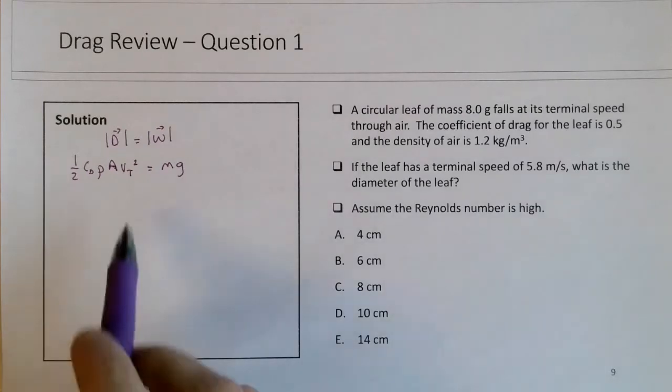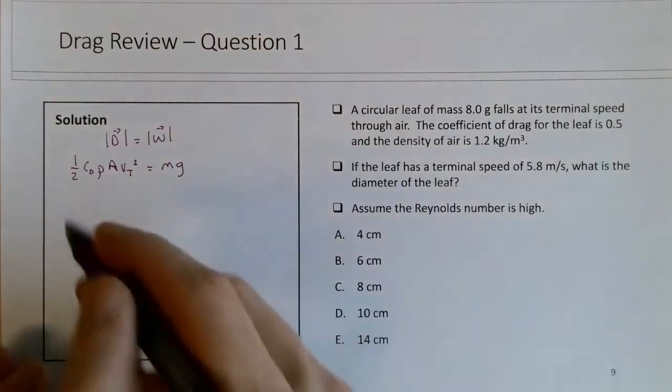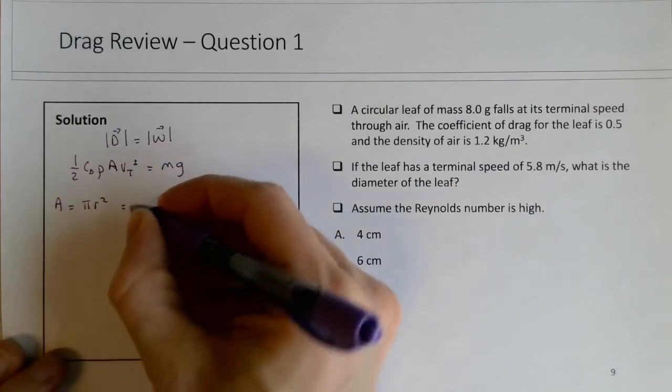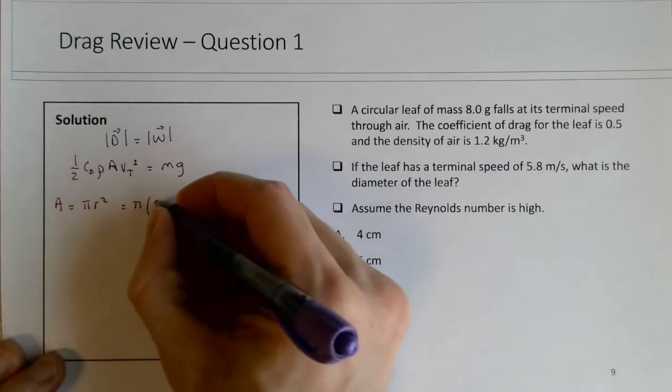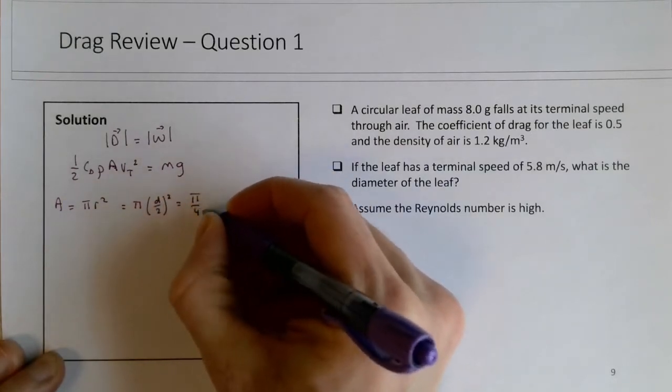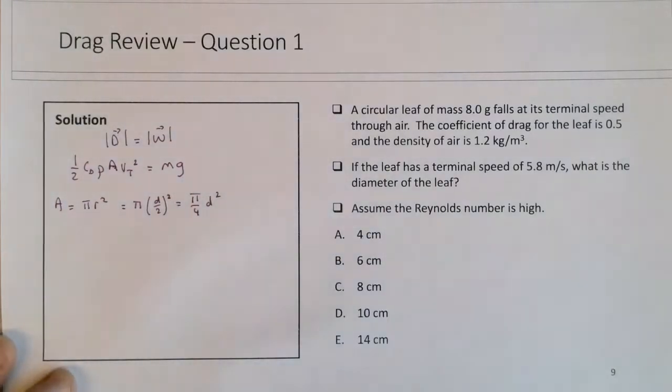I want to think about the area. The area of a circle is pi r squared, which is equivalent to pi times d over 2, all squared, which leaves us with pi over 4 d squared. Then I can substitute that pi over 4 d squared into this equation and try to isolate d.